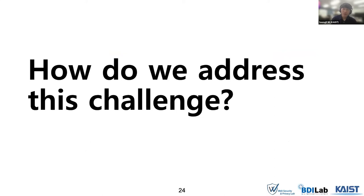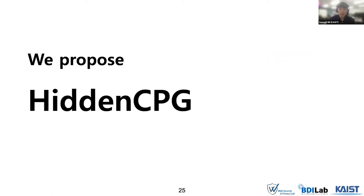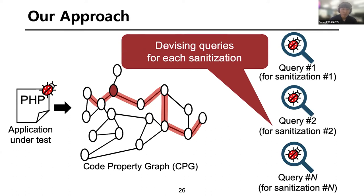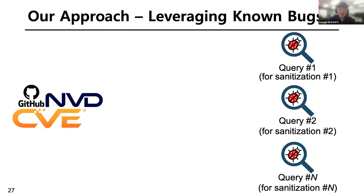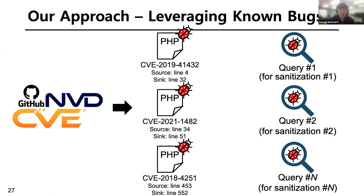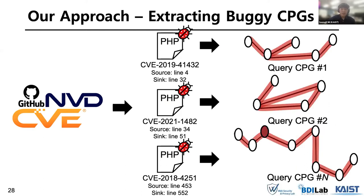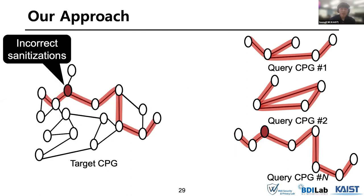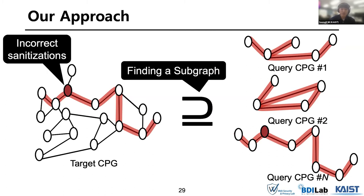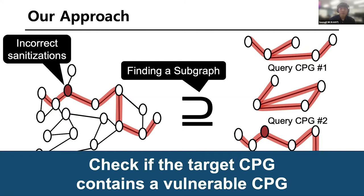The key question for our work is: is there any testing tool that can efficiently handle this challenge? To answer this, we propose our framework HiddenCPG, a vulnerable code detection tool using code property graphs. Our approach leverages known CVEs. From the list of known CVEs or common vulnerabilities from GitHub, we extract vulnerable code with the locations of their source and sink. By extracting the vulnerable CPG from these codes and using it as a query, we can prepare multiple queries — and among the known bugs, there are also bugs that stem from incorrect sanitization. We then change the paradigm of statically identifying vulnerabilities as a subgraph matching problem that checks if the target CPG contains a vulnerable CPG.